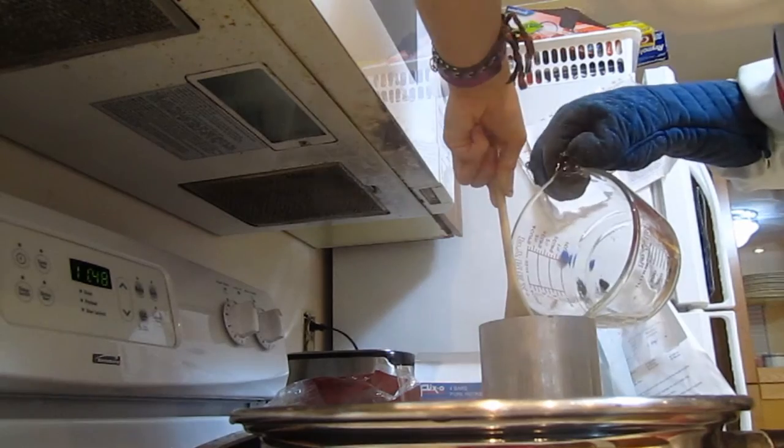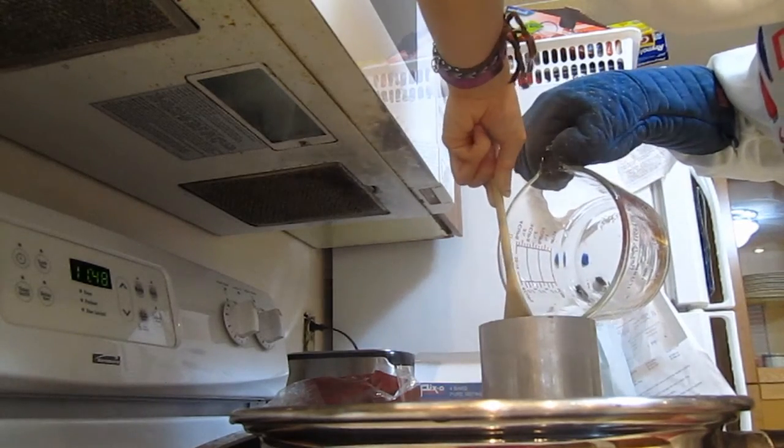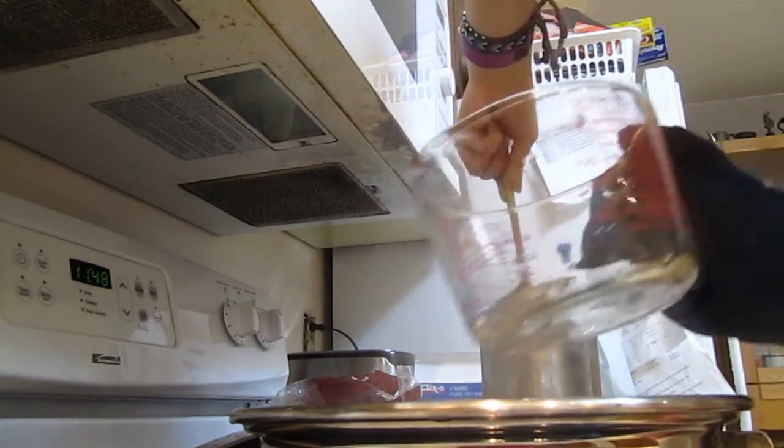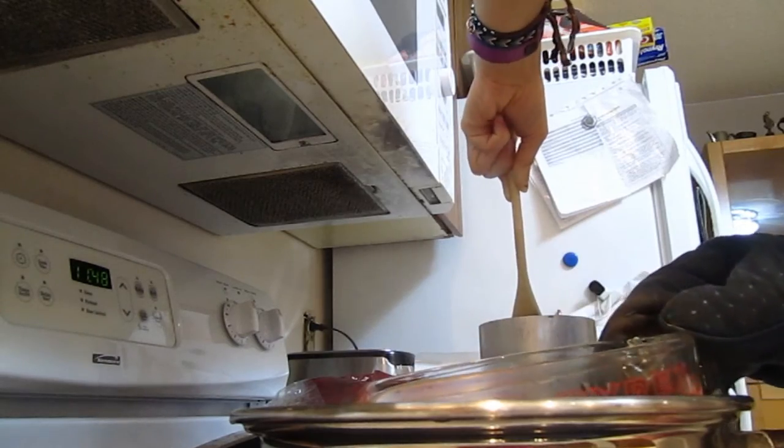Keep pressing down as hard as you possibly can until a thin film of hardened wax forms. Then slowly and carefully remove the wooden spoon.